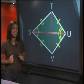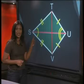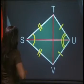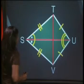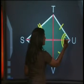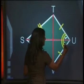Now we've identified which angles are equal, let's mark them on this diagram. So we know that this part of angle S is equal to this part of angle S. We also know that this angle here is equal to this angle here.